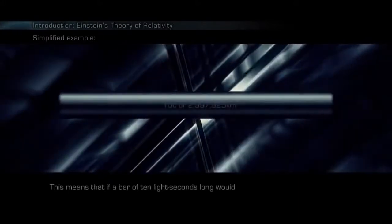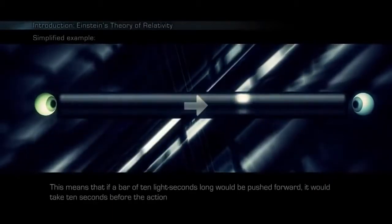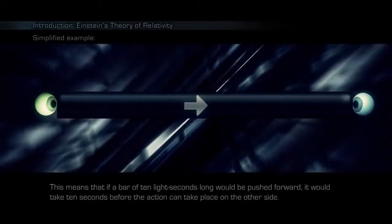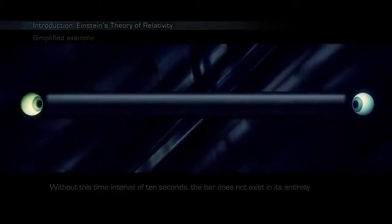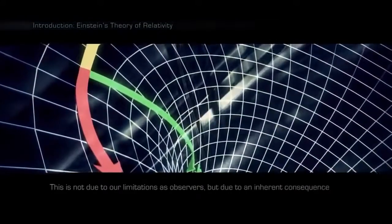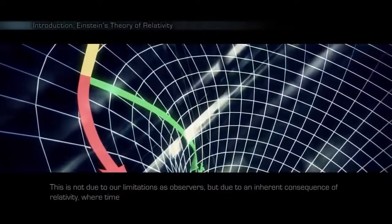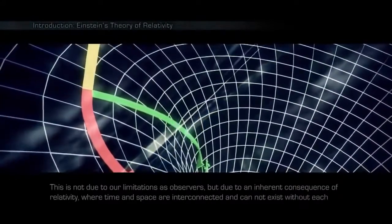Nothing can travel faster than the speed of light. This means that if a bar of 10 light seconds long would be pushed forward, it would take 10 seconds before the action can take place on the other side. Without this time interval of 10 seconds, the bar does not exist in its entirety. This is not due to our limitations as observers, but due to an inherent consequence of relativity, where time and space are interconnected and cannot exist without each other.